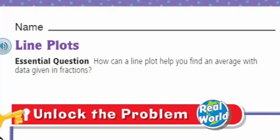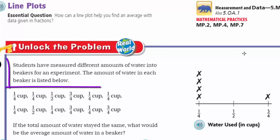Okay, we'll be fine. Look at the topic. Line plots. That seems fairly reasonable. The essential question, our learning target, our objective, our purpose: how can a line plot help you find an average with data given in fractions? It sounds really hard, but you know what, like always, we always seem to figure it out, and we always seem to do really well when we unlock the problem.